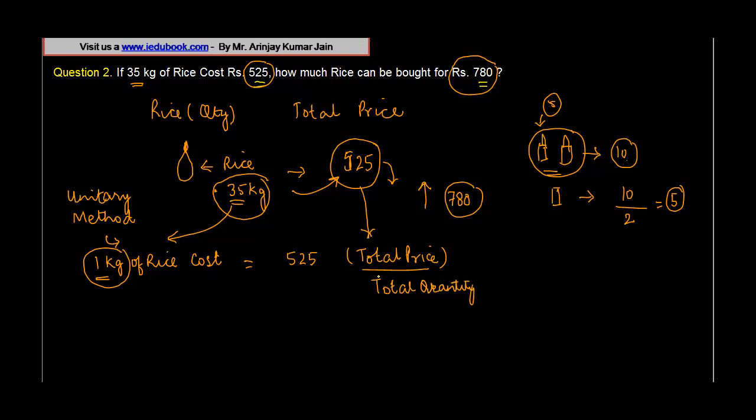Total price is 525, total quantity is 35 kgs. Let's divide them. Both of them have five, so we'll divide them by five. 5 times 7 is 35, then we get 12. 7 goes into 105 - 15 times. So each kg of rice